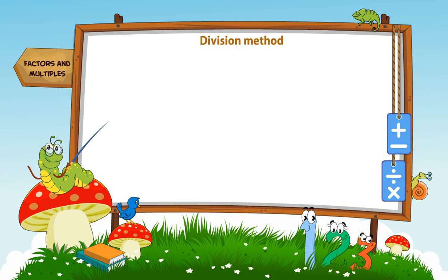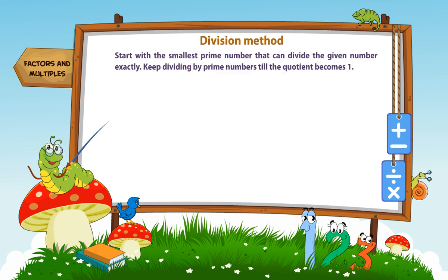Sometimes, for bigger numbers, it becomes difficult to make factor trees. So, we use the division method. Start with the smallest prime number that can divide the given number exactly. Keep dividing by prime numbers till the quotient becomes 1. Let's write the prime factorization of 96 using the division method.